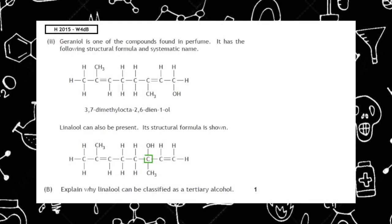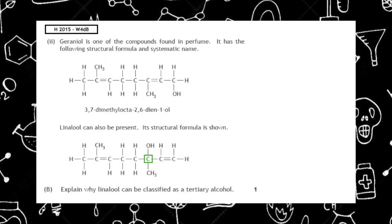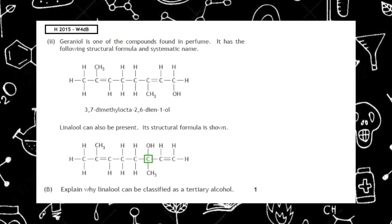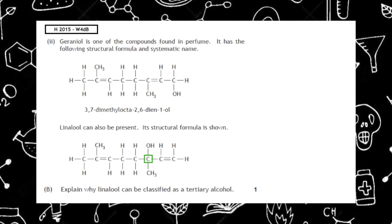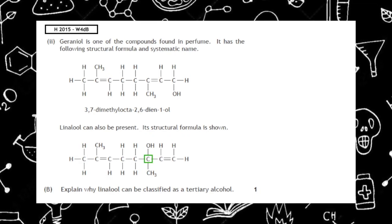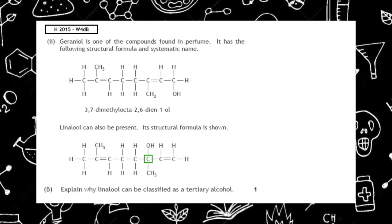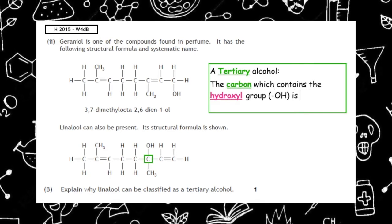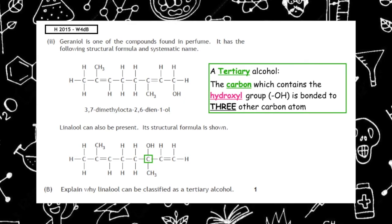This past paper question is from the Higher 2015 Written 1 DB. Explain why this alcohol can be classed as a tertiary alcohol. Based on our definitions, we need to look at the carbon which contains the hydroxyl group, and the carbon which contains the hydroxyl group is bonded to three other carbon atoms, so it's classed as a tertiary alcohol.